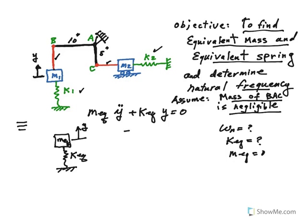The best way to find equivalent spring and equivalent mass is to use energy method. And the way we use energy method is for equivalent spring, we use the potential energy, and for equivalent mass, we use kinetic energy.